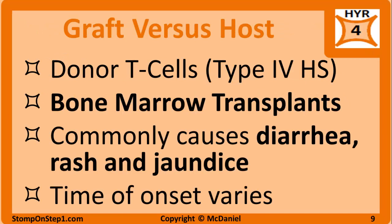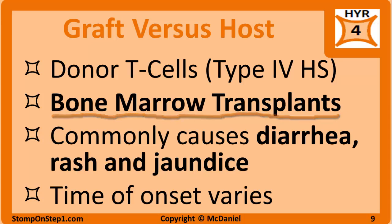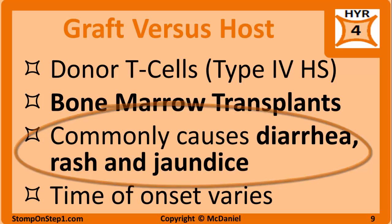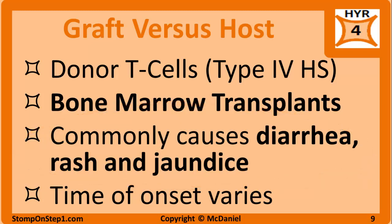Graft versus host disease is an example of type 4 hypersensitivity. It is mostly seen in bone marrow transplants because that donated tissue contains the largest amount of immune cells. Symptoms commonly include diarrhea, rash, and jaundice. The time frame for onset varies widely depending on the subtype. Immunosuppressants are usually the treatment of choice for graft versus host disease.